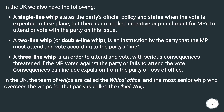A three-line whip is an order to attend and vote, with serious consequences threatened if the MP votes against the party or fails to attend the vote. Consequences can include expulsion from the party or loss of office.